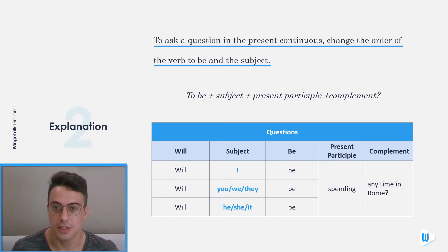To ask a question in the present continuous, change the order of the verb to be and the subject. To be plus subject plus present participle plus complement. Questions: